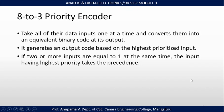Next, we will see what an 8-to-3 priority encoder is. An 8-to-3 priority encoder has 8 inputs and 3 outputs. It takes all data inputs one at a time and converts them into an equivalent binary code at its output. It generates an output code based on the highest prioritized input. If two or more inputs are equal to 1 at the same time, the input with the highest priority takes precedence.